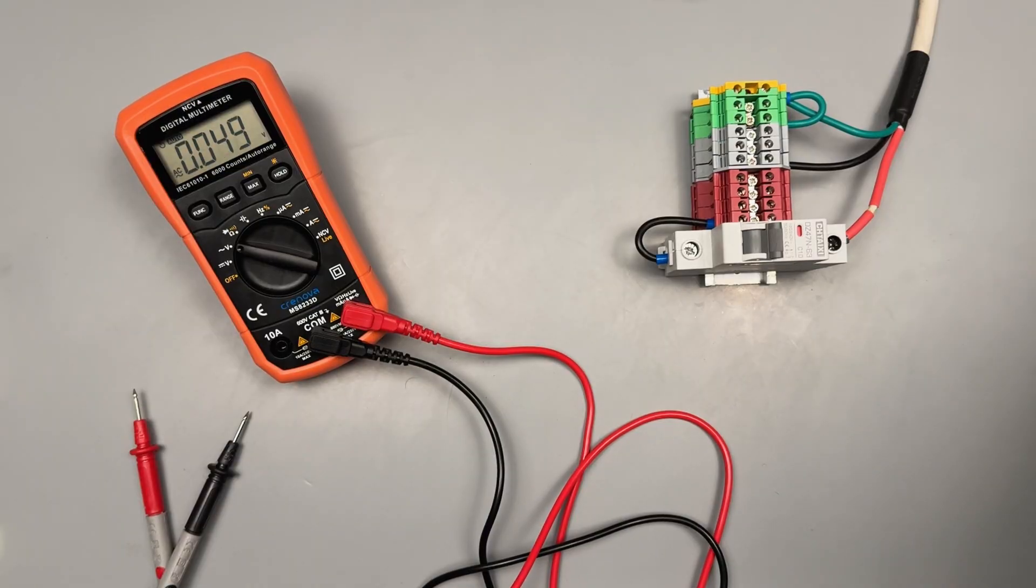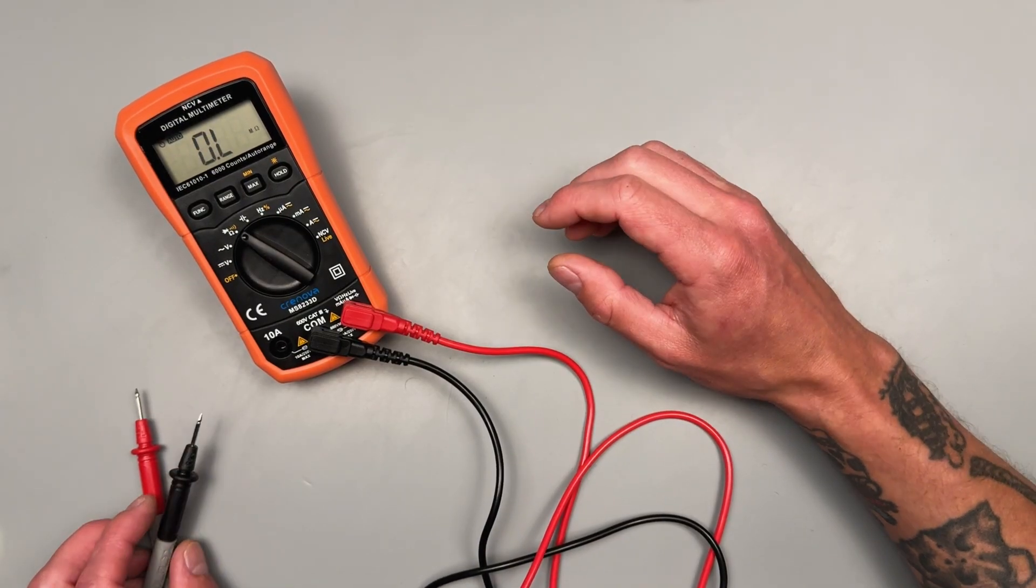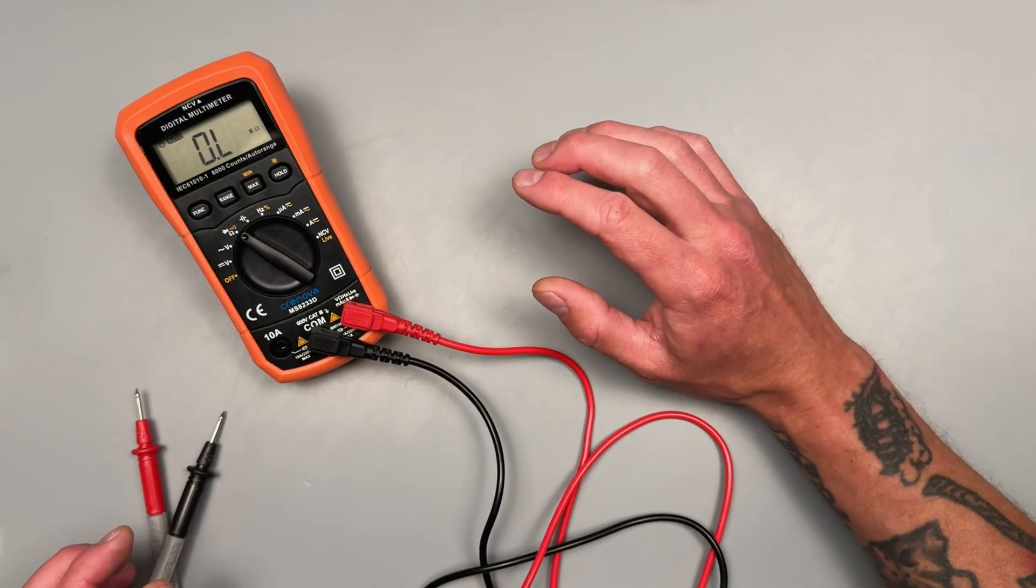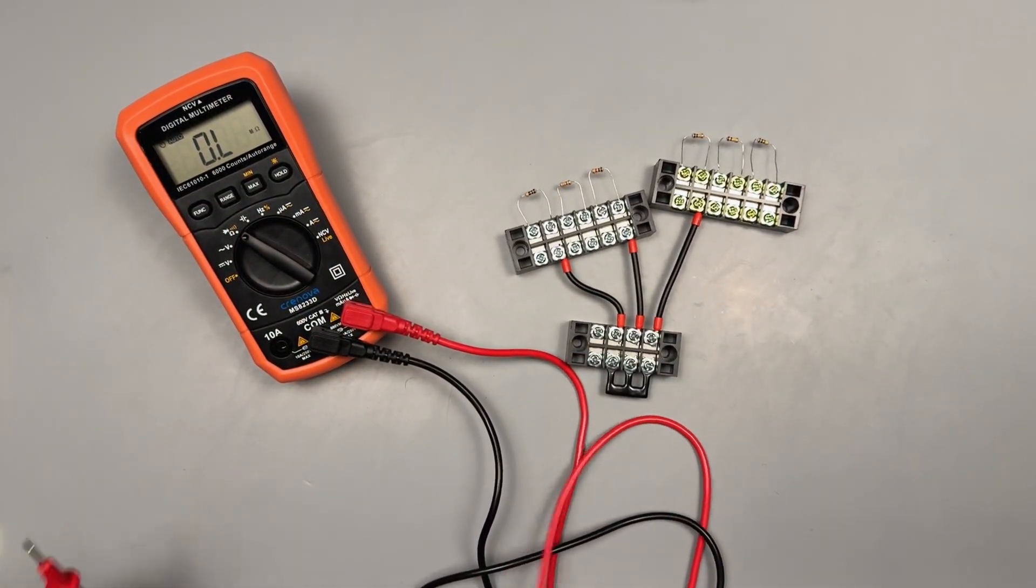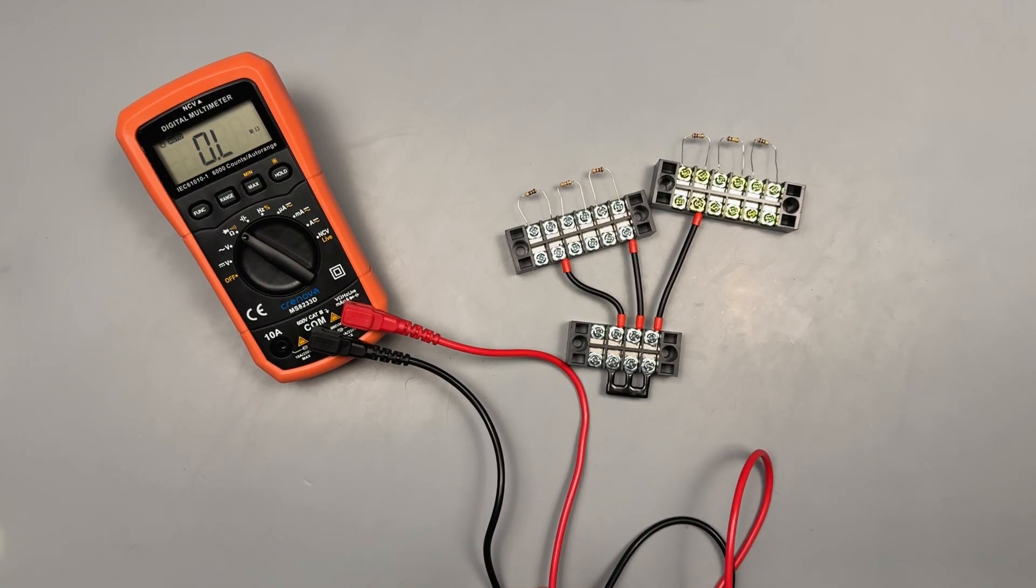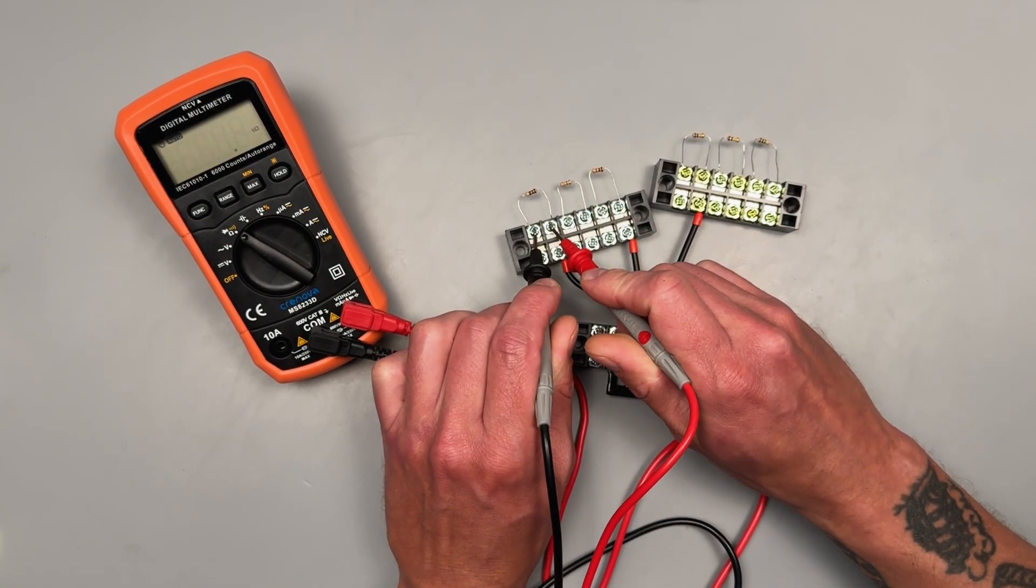Alright, onto the fun stuff. Let's take a look at resistance, diode, and continuity. It should default to your resistive measurement. Just got some resistors here. But any electrical load is going to have some level of resistance.